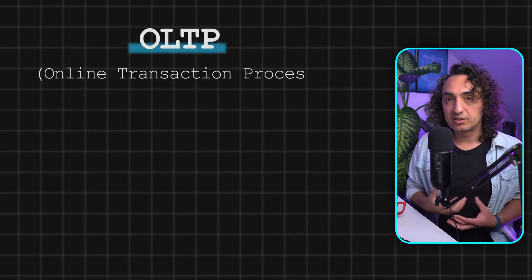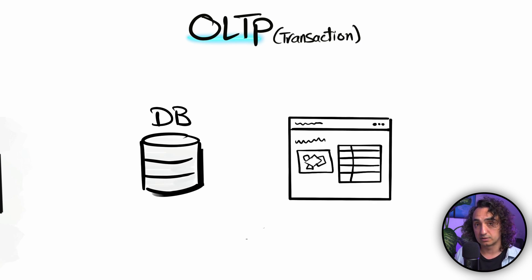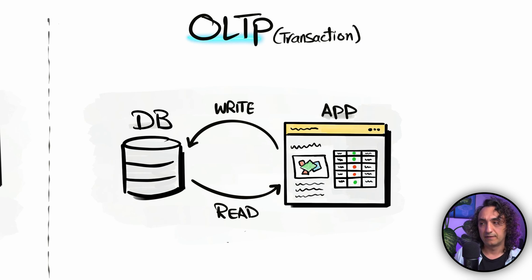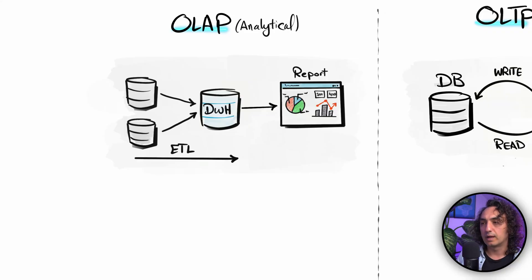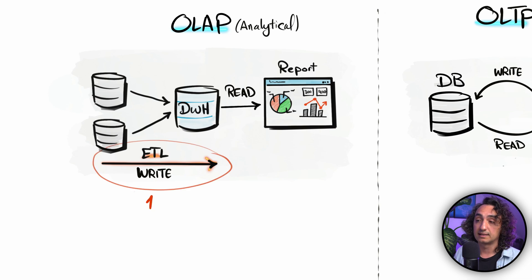On the other hand, we have OLTP systems — Online Transactional Processing — like e-commerce, finance, and banking, where you have a back-end database and front-end applications for end users. As users interact with the app, this causes both write operations — inserting or changing data — and read operations to show data in the app. So we have both read and write, and the main question becomes: do we want to improve read performance or write performance?